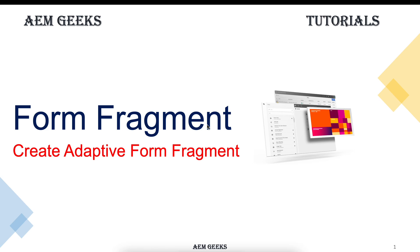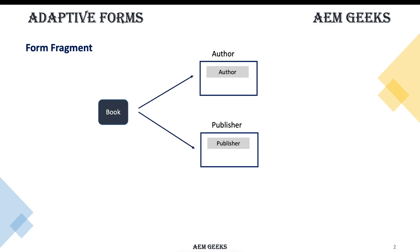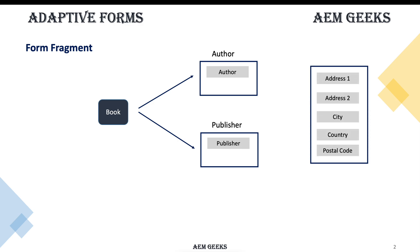In this tutorial I'll talk about form fragments. Just as content fragments and experience fragments are used to reuse content, you can create form fragments to reuse your form fields in different forms. For example, say you have a book with two identities: author and publisher. Both forms need fields to save an address, so rather than creating those fields every time in different forms, we will create a form fragment.